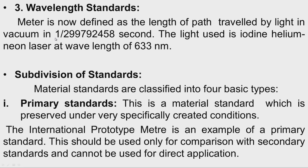In order to overcome these difficulties, wavelength standards are established. The meter is now defined as the length of path travelled by light in vacuum in 1/299,792,458 second. The light used to establish this wavelength standard is an iodine-stabilized helium-neon laser at a wavelength of 633 nanometers. This is not affected by environmental conditions, so it is more convenient to use and can be established easily.